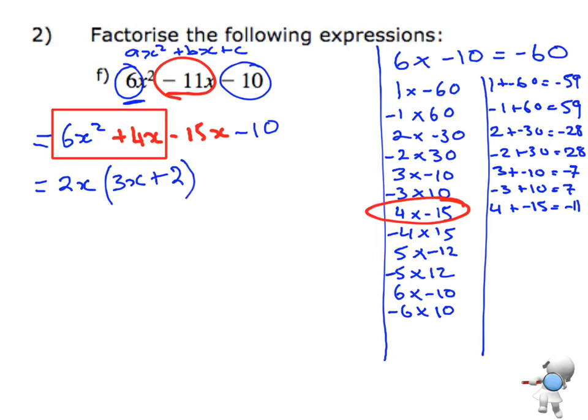Now I'm going to take these next two pieces and do the same process with them. I'm going to factorize them. So then I'm going to say, minus 15x, take away 10. I can take out negative 5 as a common factor. So that's going to leave me with 3x plus 2.